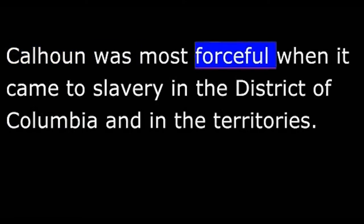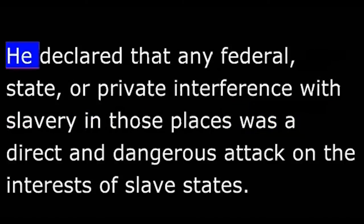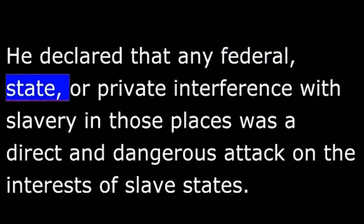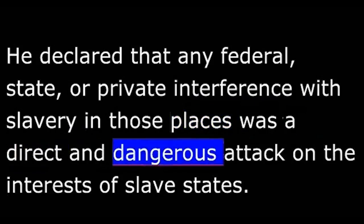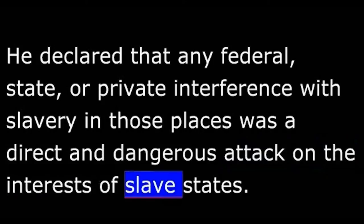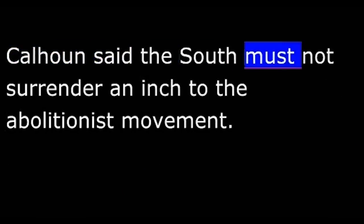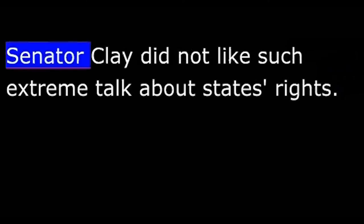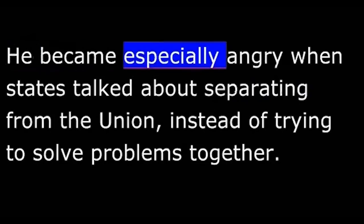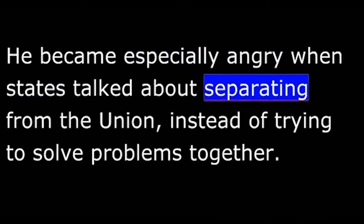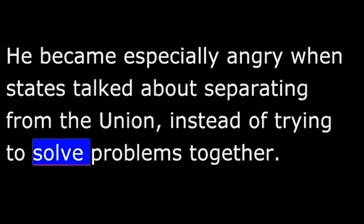Calhoun was most forceful when it came to slavery in the District of Columbia and in the territories. He declared that any federal, state, or private interference with slavery in those places was a direct and dangerous attack on the interests of slave states. Calhoun said the South must not surrender an inch to the abolitionist movement. "If we do," he said, "we are gone." Senator Clay did not like such extreme talk about states' rights. He became especially angry when states talked about separating from the Union instead of trying to solve problems together.